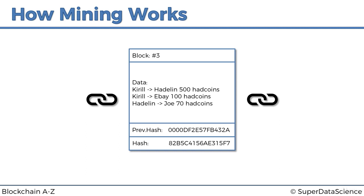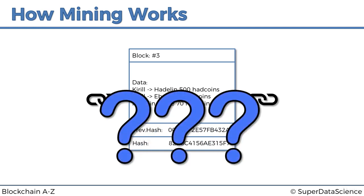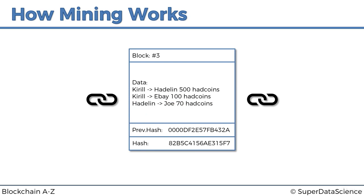This instantly raises a question: if it's so simple to just take the block number, the data, and the previous hash, put them into a hashing algorithm, and get a hash out — which takes half a second — then how come there are hundreds of thousands of mining rigs around the world with lots of computational power dedicated to them? Well, in reality it's not that simple. There's actually another field in a block — it's time to reveal this field. It's called the nonce, and nonce stands for 'number used only once.'